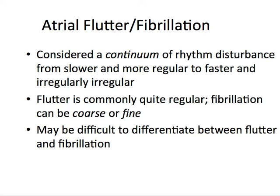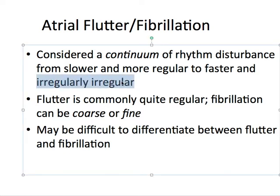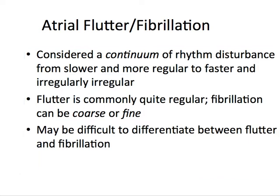AFib and AFlutter are both very similar to each other. Treatment is the same, which is why they're kind of grouped together. It's considered a continuum of rhythm disturbance from a slower and more regular sinus rhythm to a faster and irregularly irregular rhythm. That's the buzzword — irregularly irregular is considered AFib until proven otherwise on all your board exams, whether it's paramedic, nursing, or anything like that.